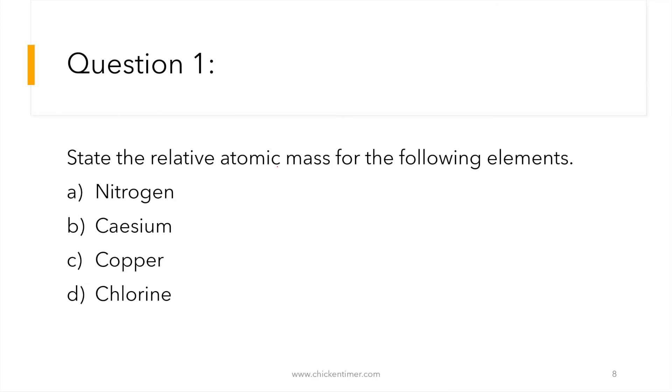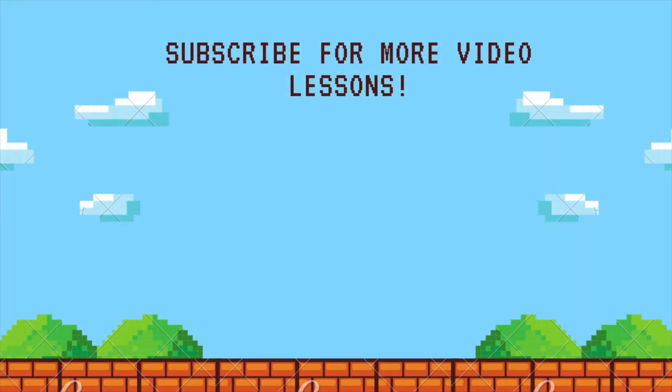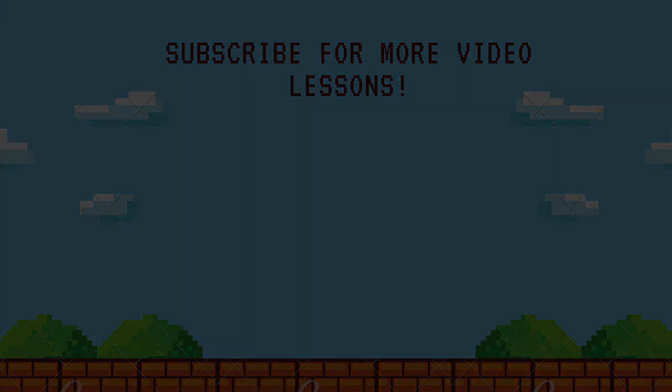So then now down here, this is state the relative atomic mass for the following elements. So this is just checking that you know how to read the periodic table. Nitrogen is 14. These are all correct.